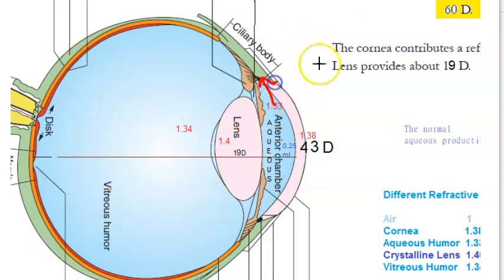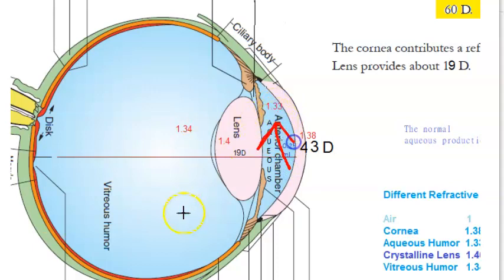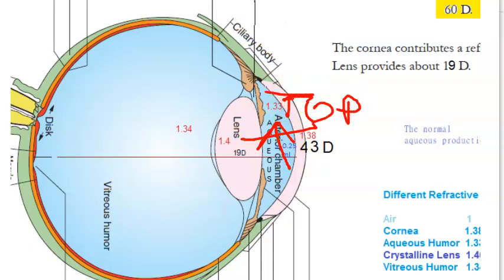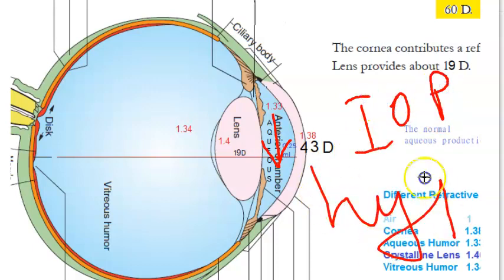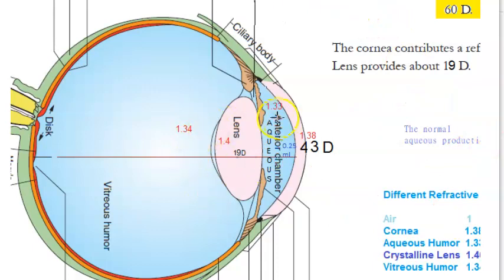It gets drained into the trabecular meshwork, and there is also uvioscleral outflow — two outflow paths for the aqueous humor. If the aqueous humor cannot drain, that will lead to increased intraocular pressure, which can lead to glaucoma. If aqueous humor is less, the intraocular pressure will be less, and that will be hypotony.